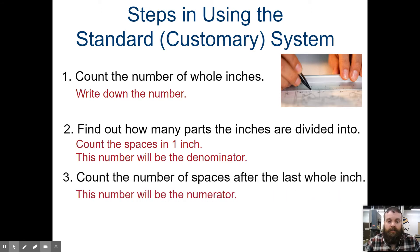Step three, count the number of spaces after the last whole inch. This number will be the numerator. So from our previous whole inch forward, we're going to count how many spaces that are that size or longer and write that as the numerator, the top of the fraction.